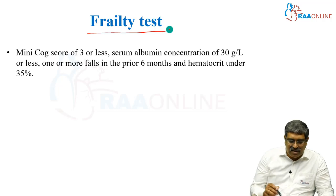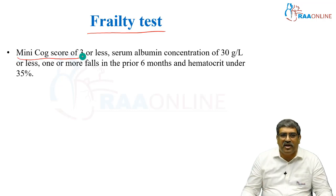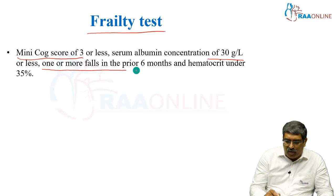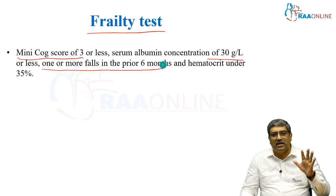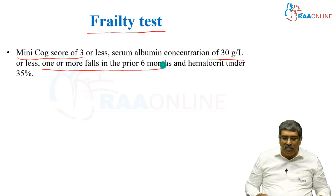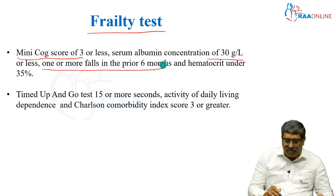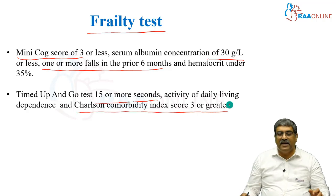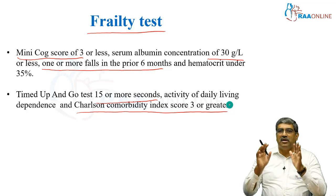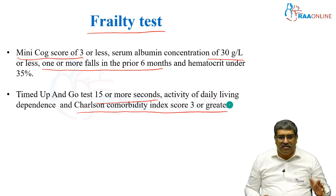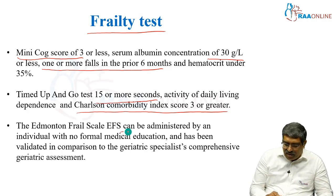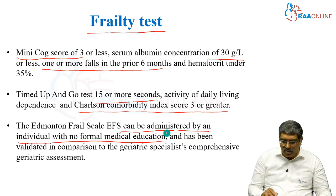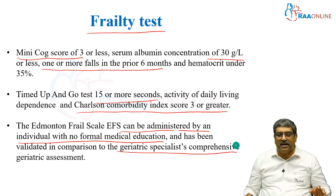Coming to summarizing the frailty tests: a mini cognitive score of 3 or less, serum albumin less than 30 grams per litre, one or more falls in the prior 6 months, and hematocrit less than 30% are all associated with poor frailty status. Timed Up and Go test of 15 seconds or more, activities of daily living dependence, and Charlson Comorbidity Index score greater than 3 are also associated with increased frailty. The Edmonton Frail Scale can be administered by an individual with no formal geriatric training and has been validated in comparison to a geriatric specialist's comprehensive geriatric assessment.